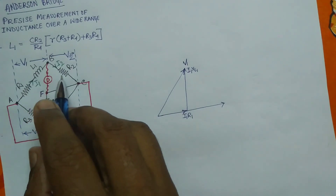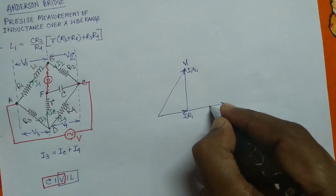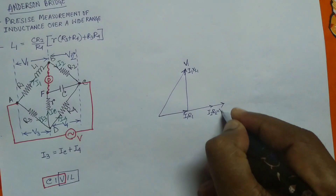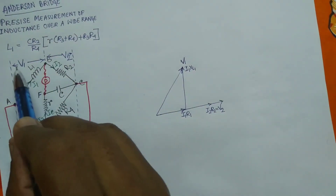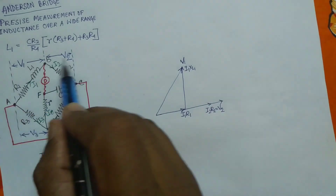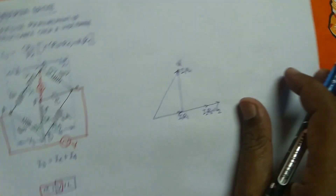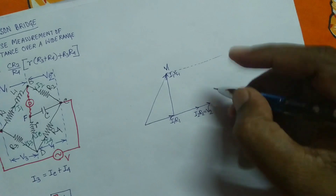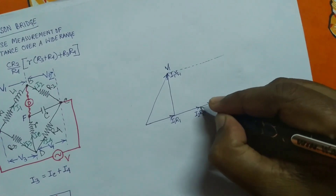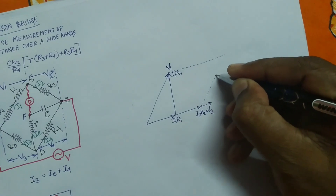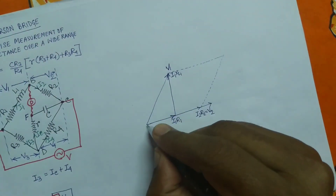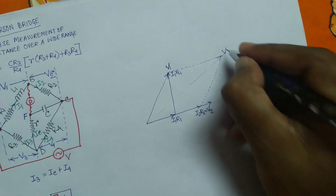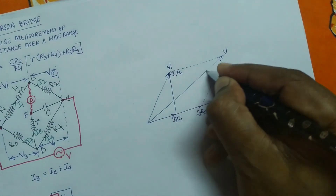The resultant of I1·R1 and I1·XL1 gives V1, the voltage drop across arm AB. The next voltage drop V2 is purely resistive, so I2·R2 is in phase with the current, and V2 equals I2·R2. The phasor addition of V1 and V2 gives the total supply voltage V.